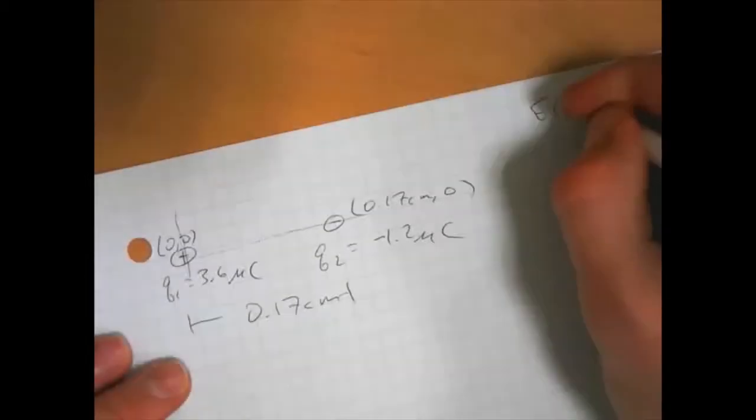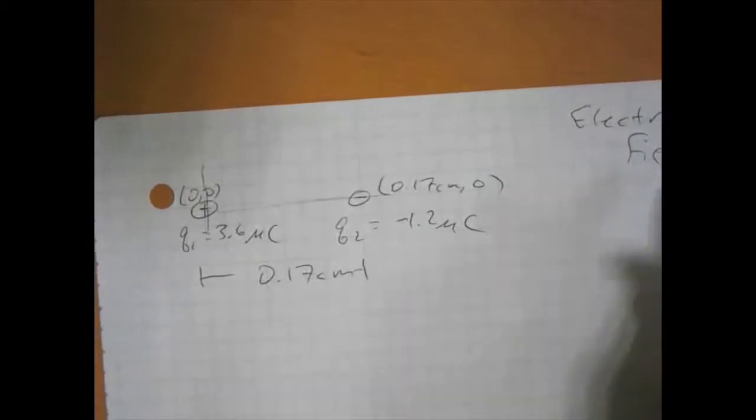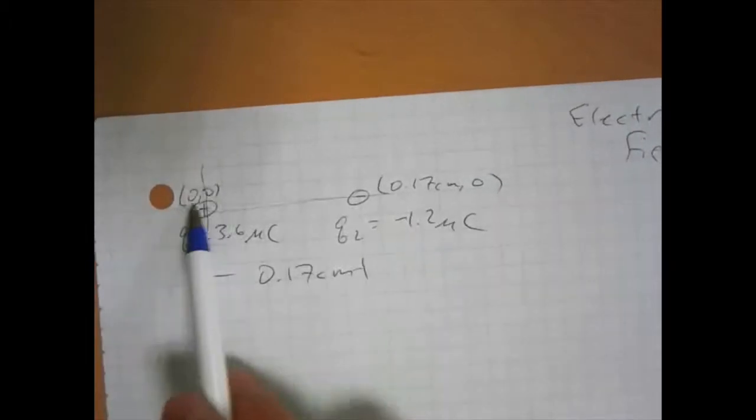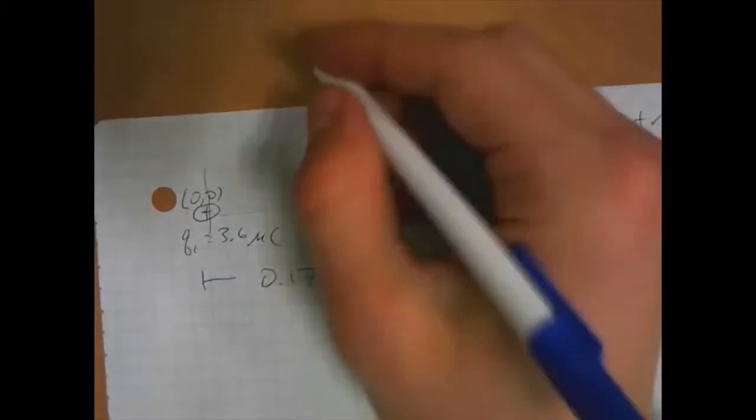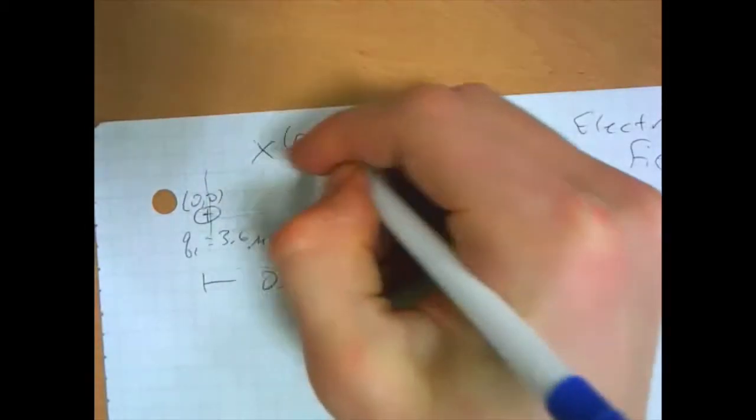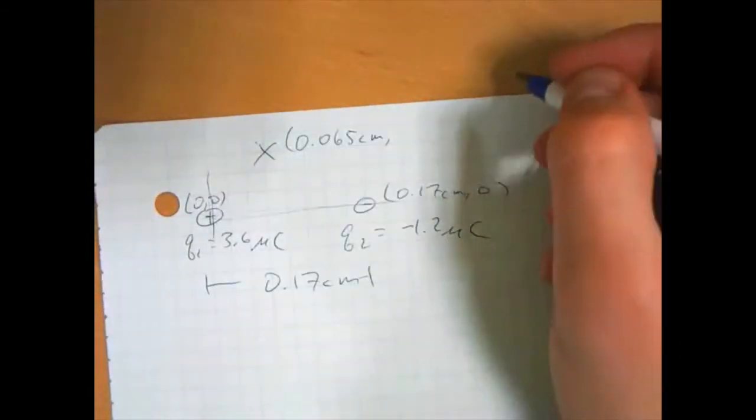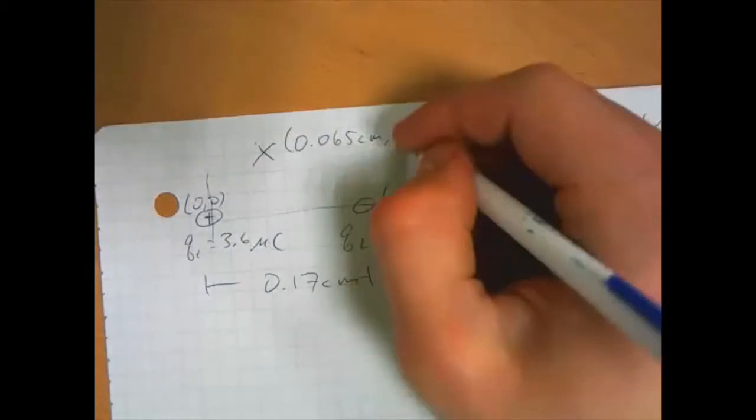Now let's say I can make this even more complicated. Let's say I have the same charge distribution as in the previous video, but now I want to find the electric field at somewhere that is not right on this x-axis. Let's say I want to find the field up here at 0.065 cm, 0.081 cm.